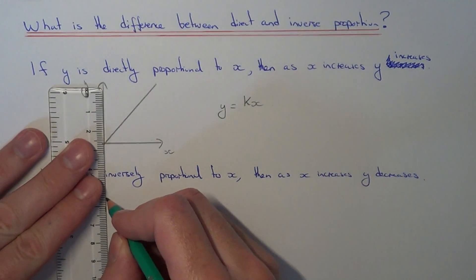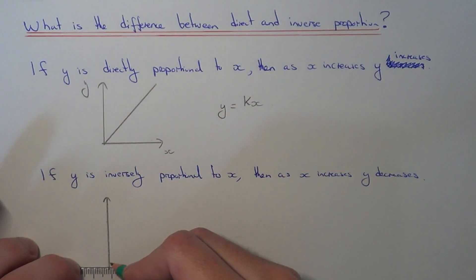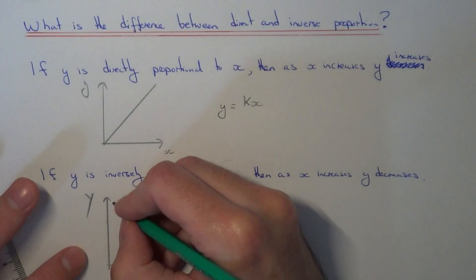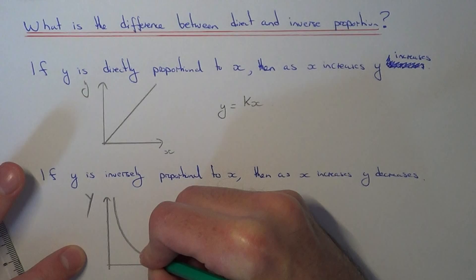So the type of graph we're looking at for these examples will be like this. So as x gets bigger, y will decrease.